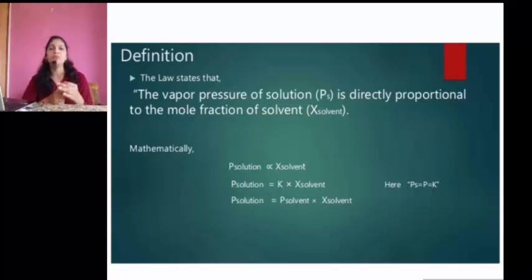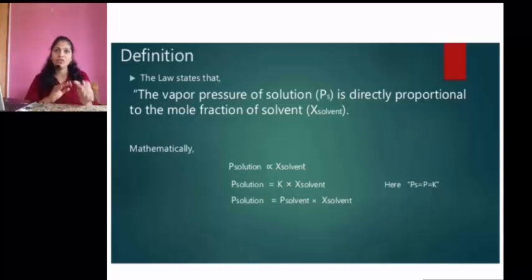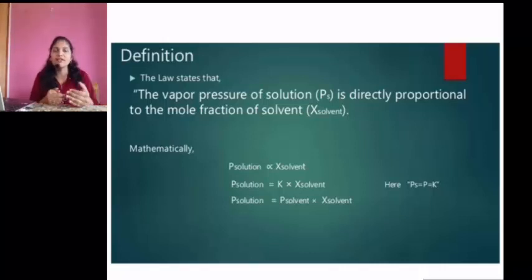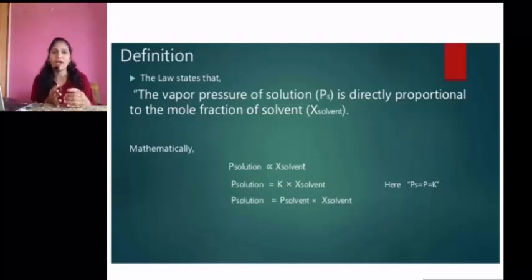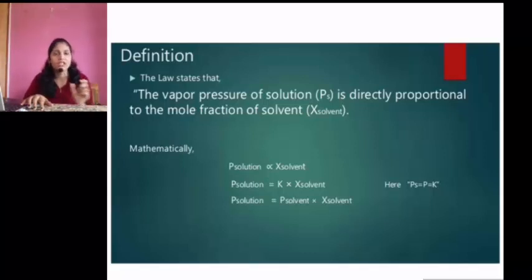That is, p(solution) = p°(solvent) × x(solvent), where p°(solvent) is the vapor pressure of the solvent in pure state and x(solvent) is the mole fraction of the solvent. These are the observations about the solvent — both components, those which are volatile in nature, can follow Raoult's Law. The statement of Raoult's Law is: vapor pressure of the solution is directly proportional to the mole fraction of the solvent. That is, p = p°(solvent) × x(solvent). This is the expression for Raoult's Law.